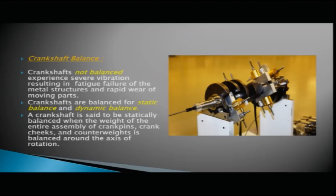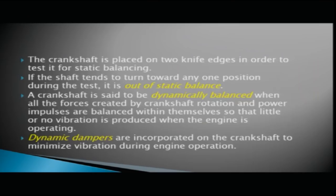A crankshaft is said to be statically balanced when the weight of the entire assembly — crank pins, crank cheeks, and counterweights — is balanced around the axis of rotation. The crankshaft is placed on two knife edges to test it for static balancing. If the shaft tends to turn toward any one position during the test, it is out of static balance.